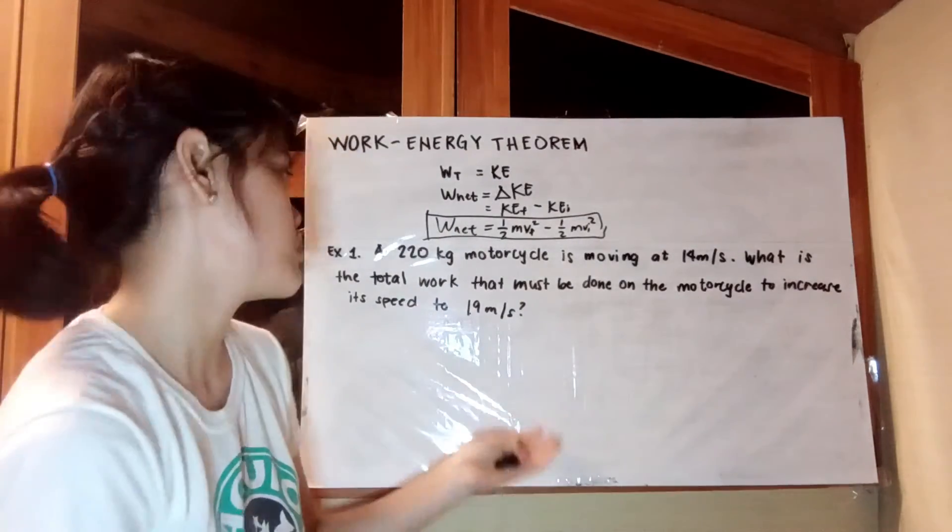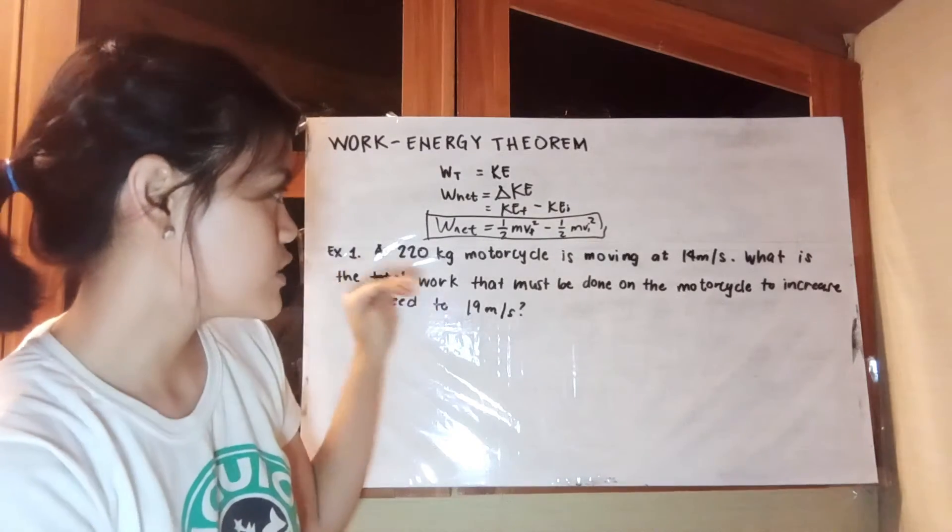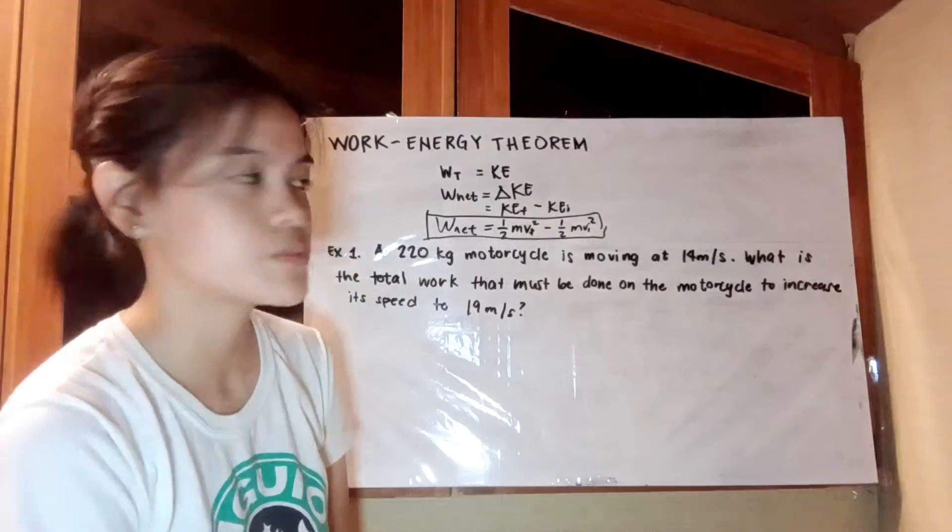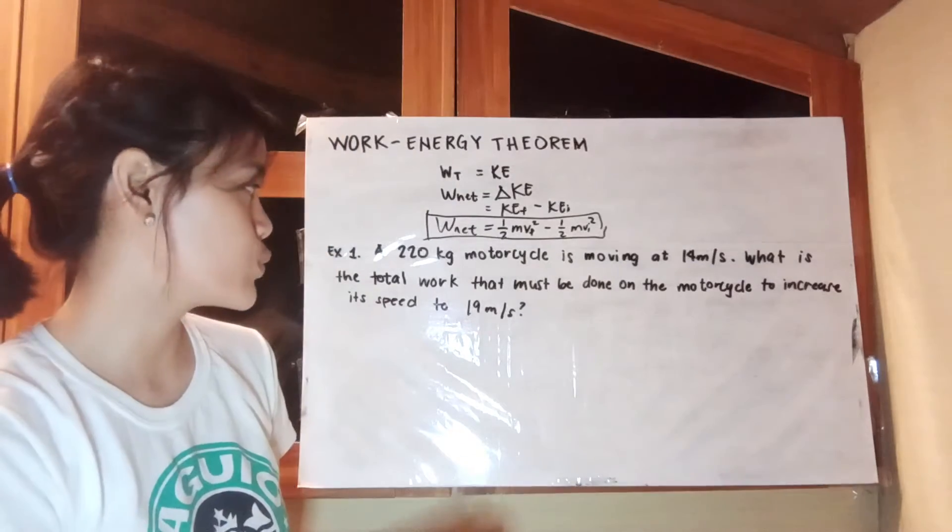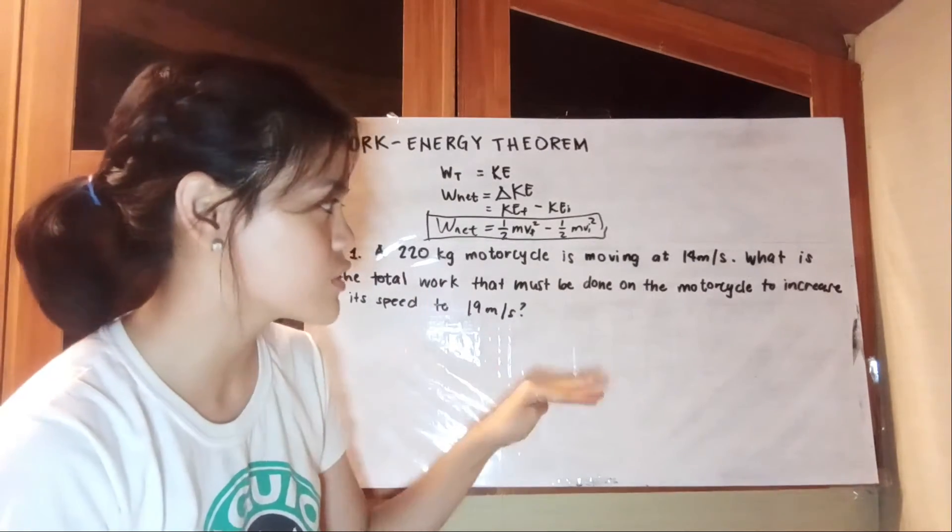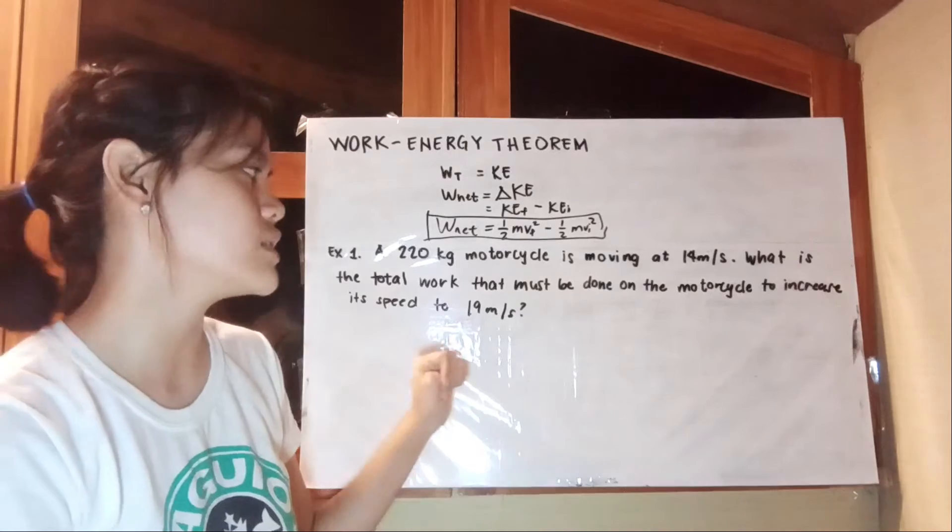Now let's move forward to our sample problem. A 220 kg motorcycle is moving at 14 m per second. What is the total work that must be done on the motorcycle to increase its speed to 19 m per second?